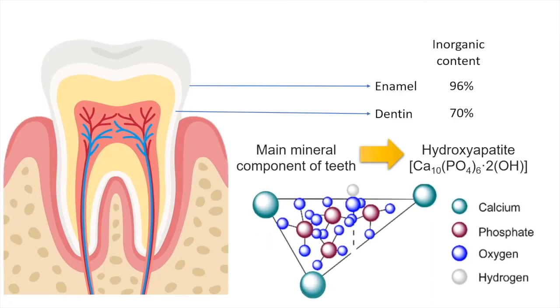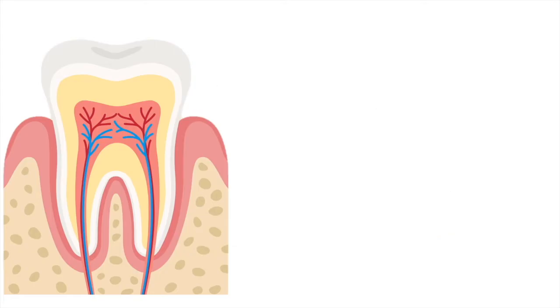Hydroxyapatite is made up of calcium and phosphate ions primarily, which is bound by hydroxyl groups that are composed of oxygen and hydrogen. Now, what happens in case of caries formation?